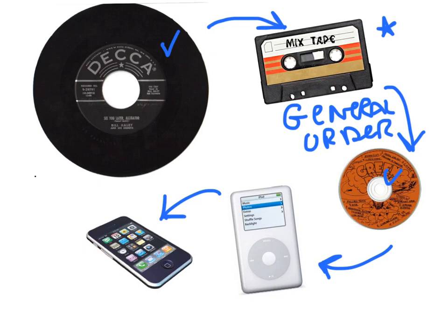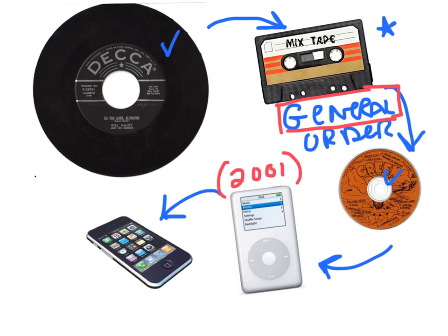A lot of the time in geology, it's not important for geologists to know exactly how old something is — they want to know approximately how old it is. Relative dating will tell you that before everybody had a smartphone, we listened to music on iPods, but it will not tell you that the first generation iPod came out in 2001.